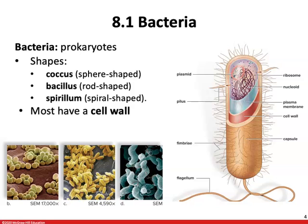Most bacteria have a cell wall in addition to the plasma membrane. Animal and human cells do not have a cell wall, and we don't use structural carbohydrates to maintain our cell membranes. Bacteria, on the other hand, have a structural carbohydrate — peptidoglycan — which we covered back in chapter 2. Peptidoglycan is a disaccharide with an amino group attached.